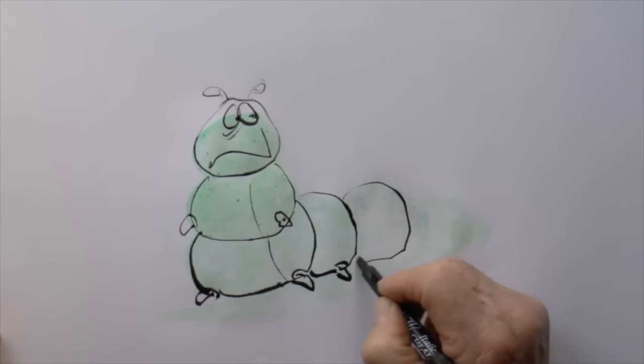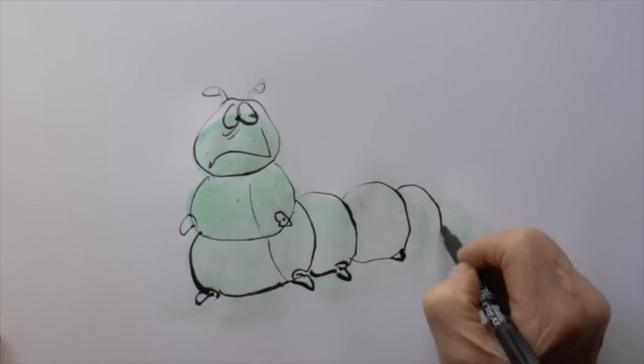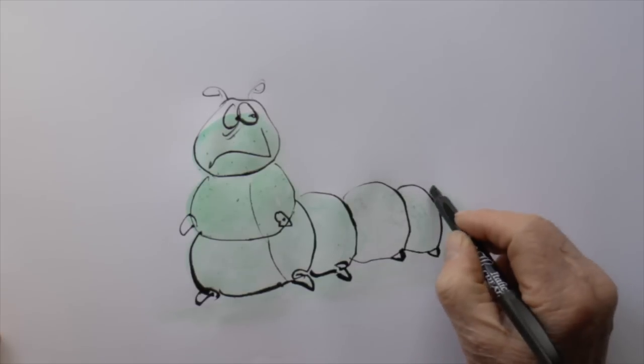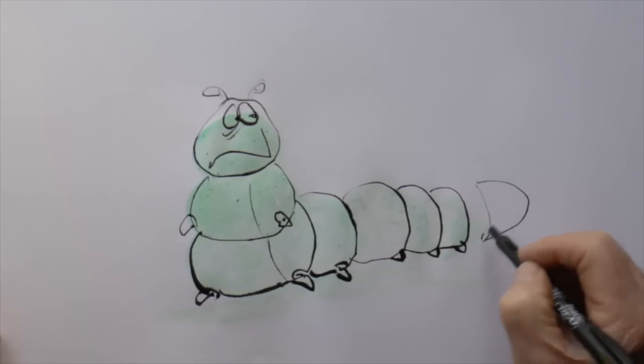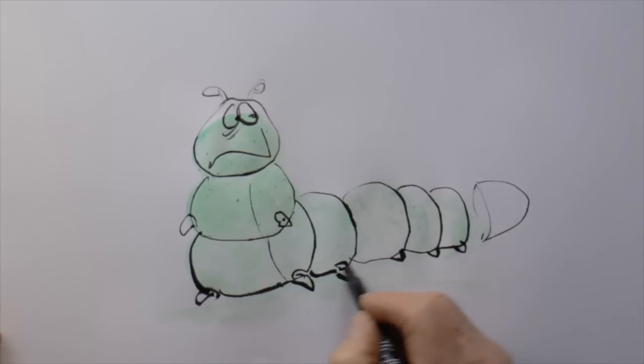And that gives you a nice effect with shading. But basically I've got the outline of the glow worm, there's his tail.